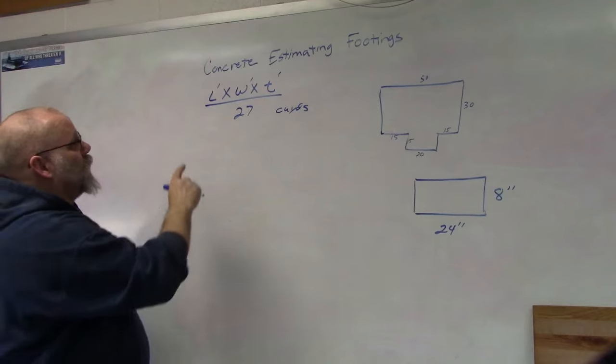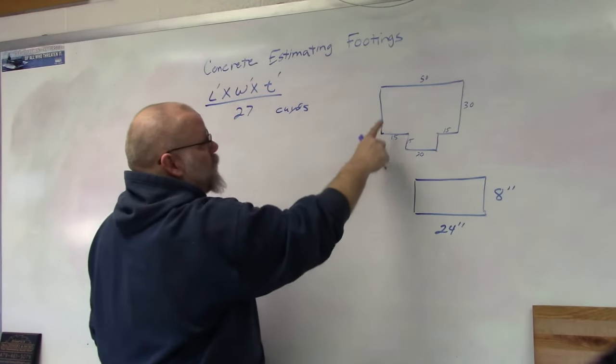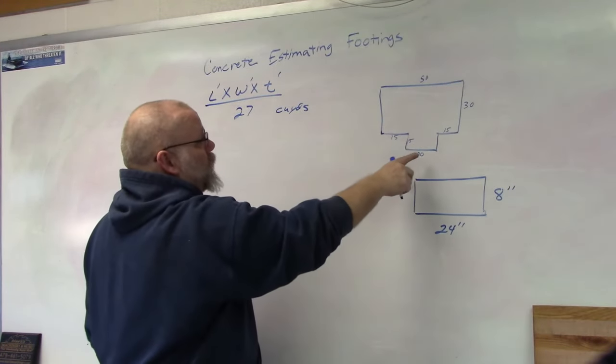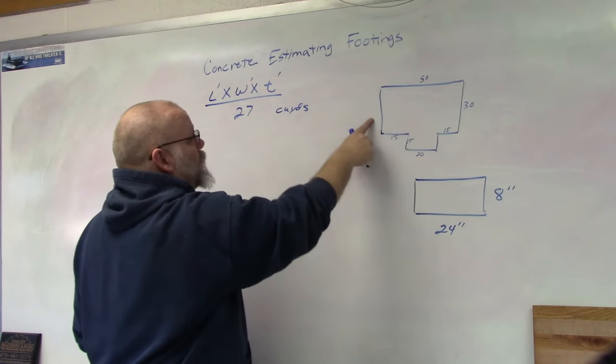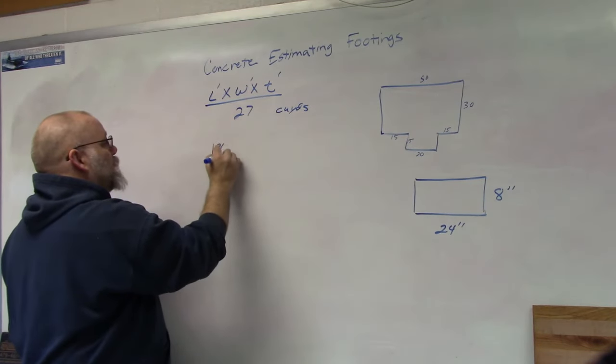So our length for this structure is 50 plus 30, 15, 15, 20, 15, 15. If you add those all together, you get 190 feet linear feet of footings.